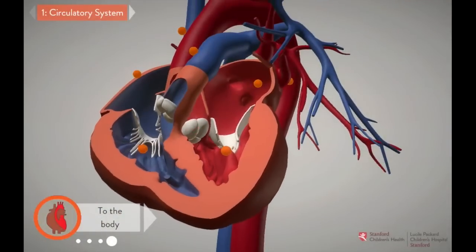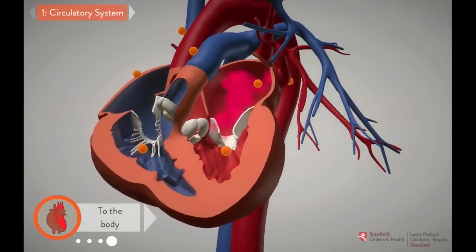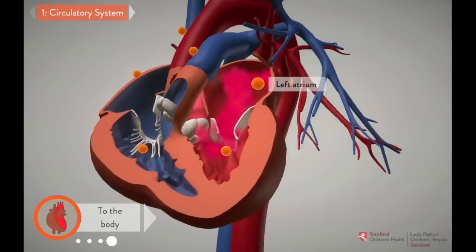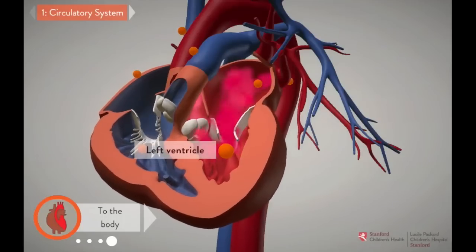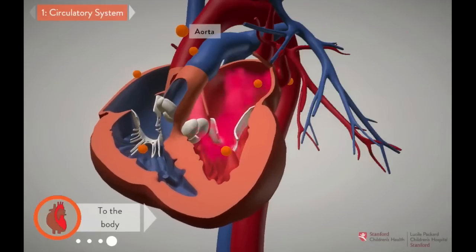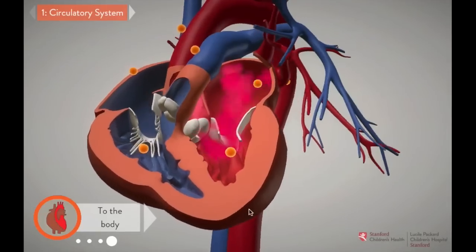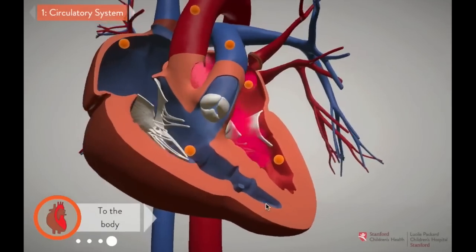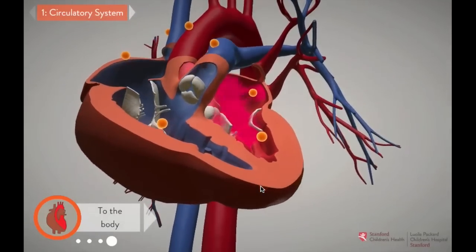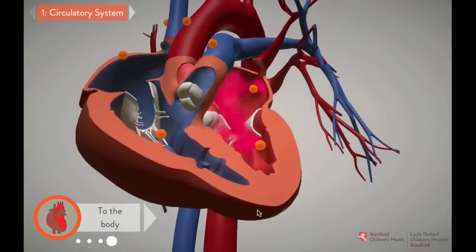Red blood returning from the lungs pours into the left atrium. From there, it flows into the left ventricle, and then into the aorta, the body's largest artery. The aorta brings red oxygenated blood up to the head and arms, and down to the abdomen and legs.